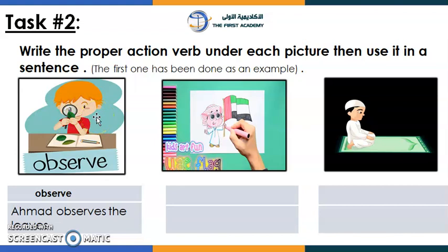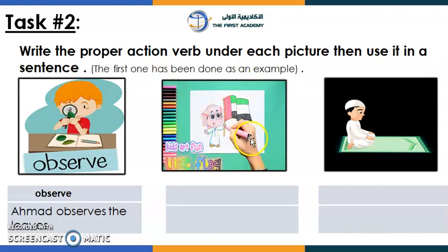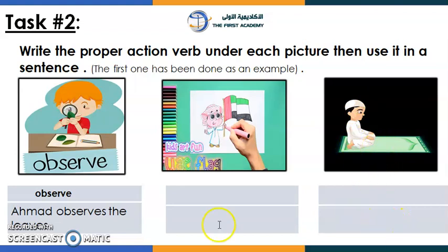Let's move to task number two. There are some pictures here — write the proper action verb under each picture, then use it in a sentence. The first action verb is 'observe' — excellent! The sentence reads: 'Ahmad observes the leaves.' Now look at the next picture — what is the person doing? They're coloring or drawing — put it in a sentence. The last picture: what is he doing? He's praying — well done! Put it in a sentence too.